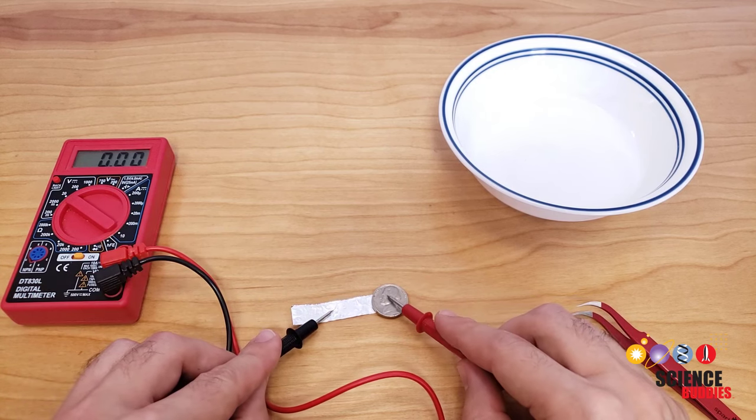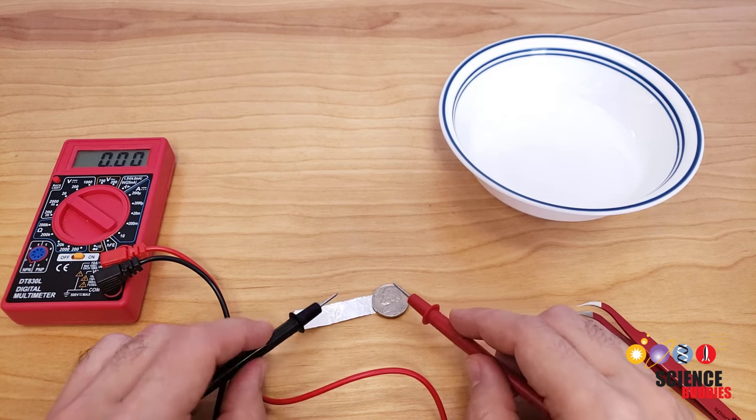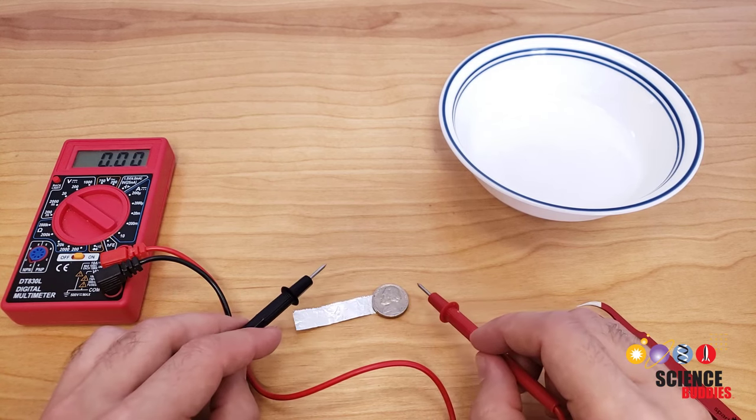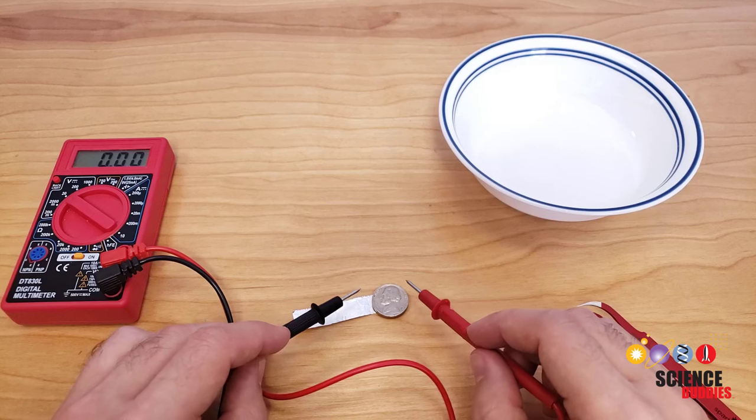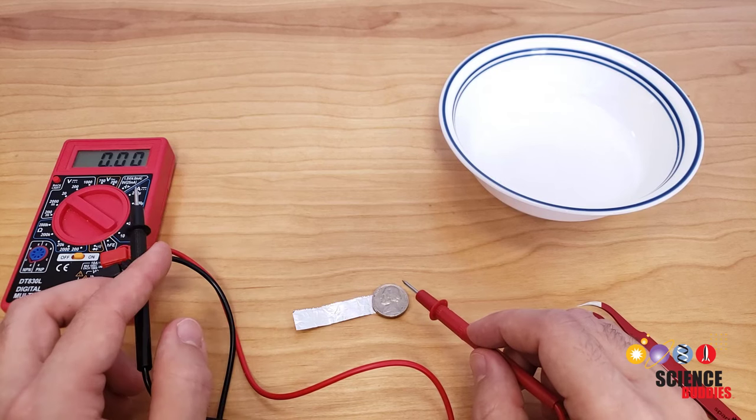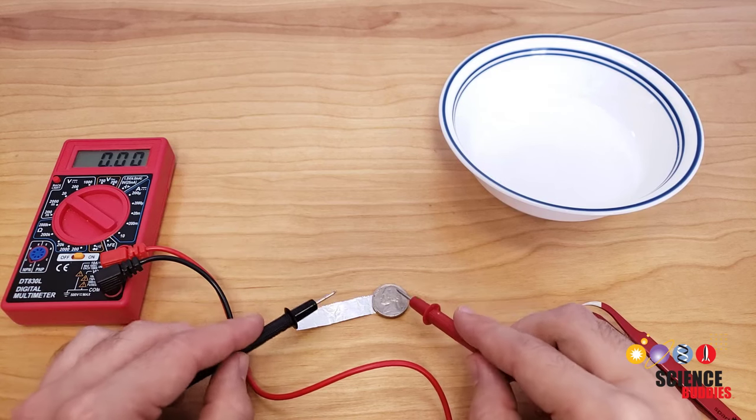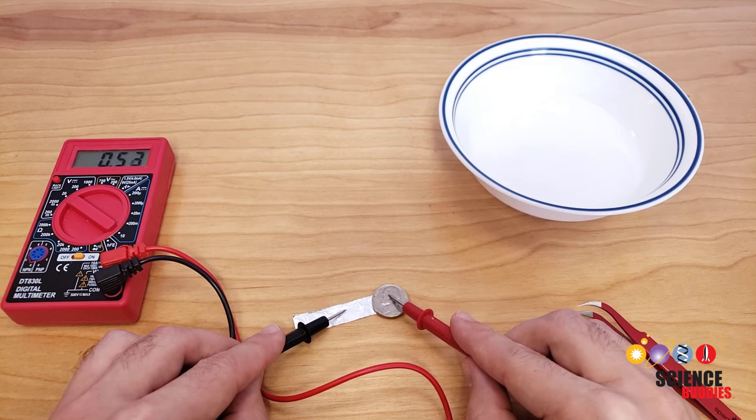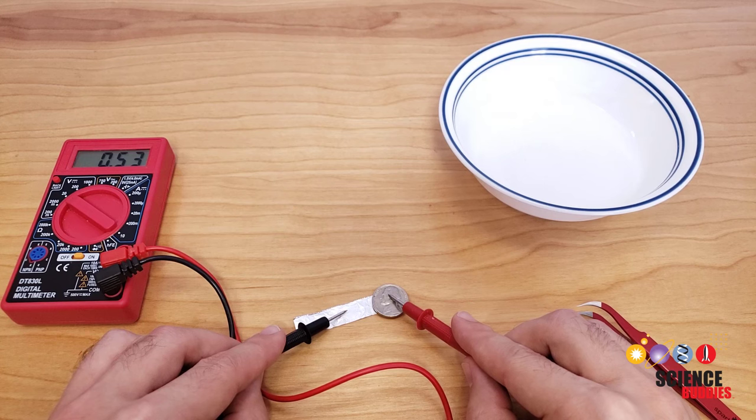However, if you press too hard and there's too much liquid in between the coins, then you can squeeze the liquid out over the edges of the battery causing a short circuit, which can again cause a low or fluctuating reading. So, you will need to play with the amount of pressure you apply with the multimeter probes to make sure you get a stable and consistent reading.